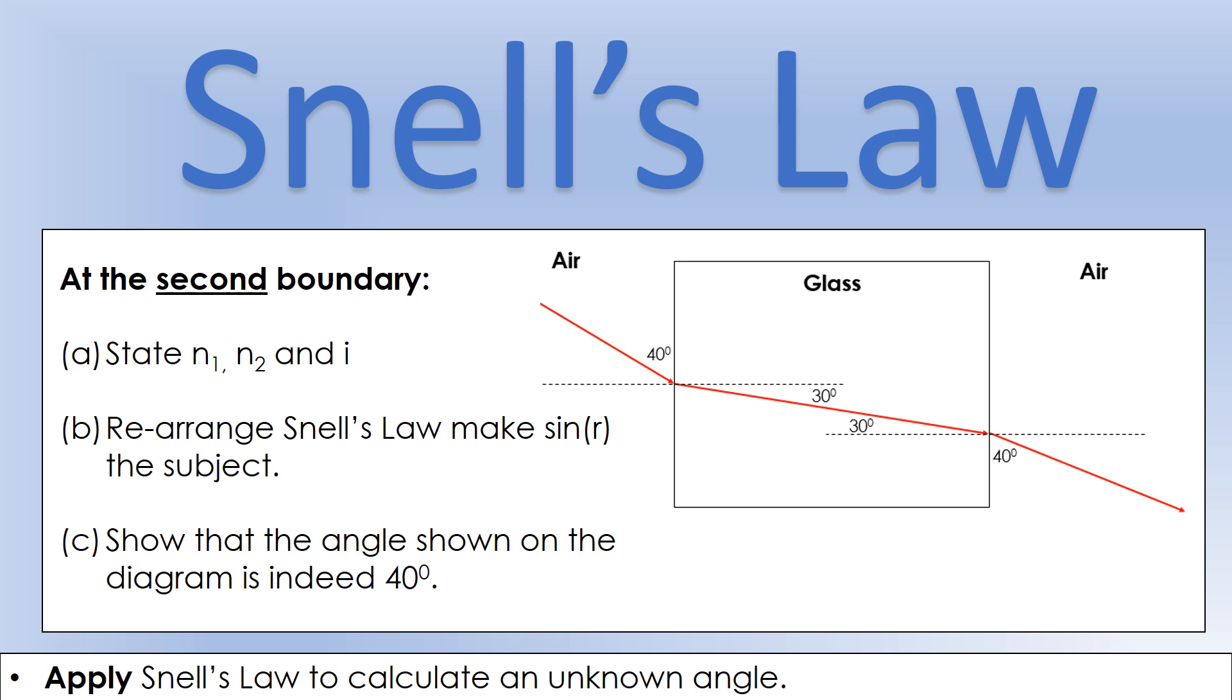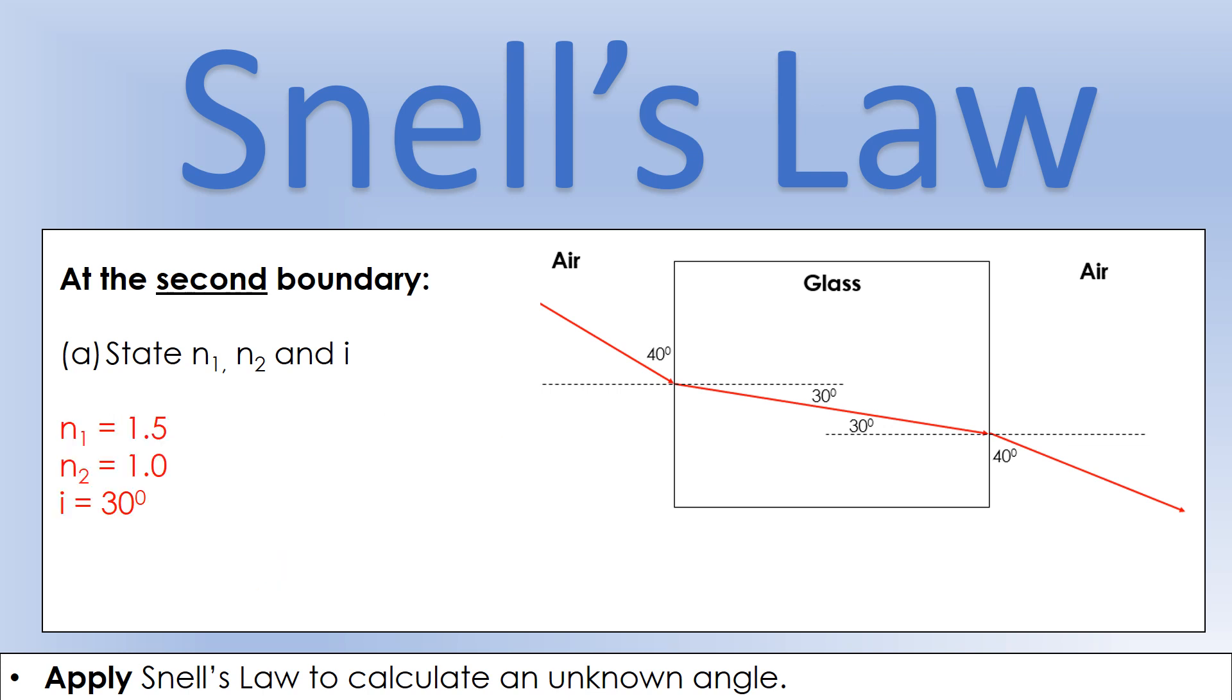I'm assuming that you've had an attempt at these questions. At the second boundary, the light is starting in glass, so n1 is the 1.5 we calculated earlier. It's going into air, so n2 is going to be 1, and we can see the angle of incidence is 30 degrees shown on our diagram.